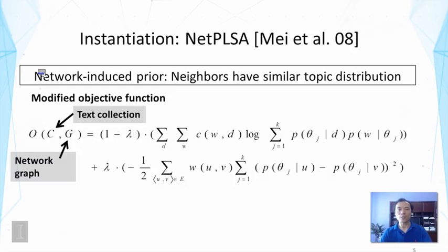Technically, we have a modified objective function here that's defined on both the text collection C and the network graph G. If you look at this formula, you can actually recognize some parts fairly familiarly, because they should be fairly familiar to you by now. Can you recognize which part is the likelihood for the text data given by a topic model?